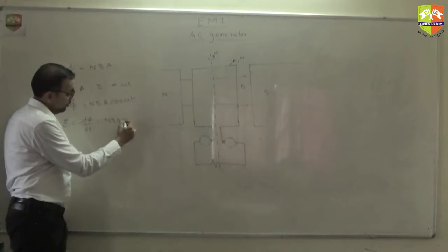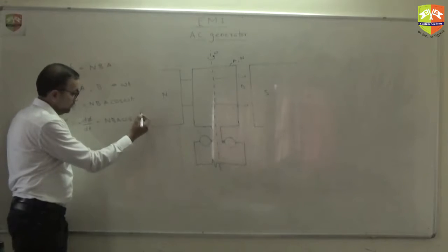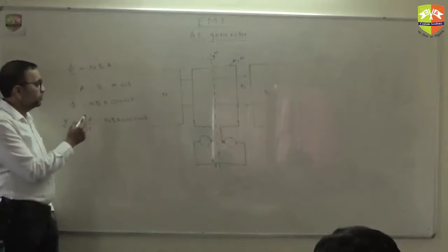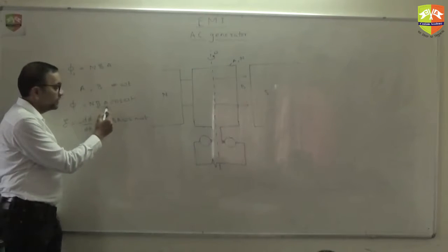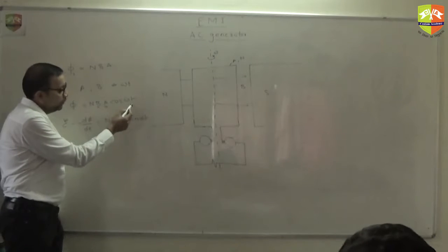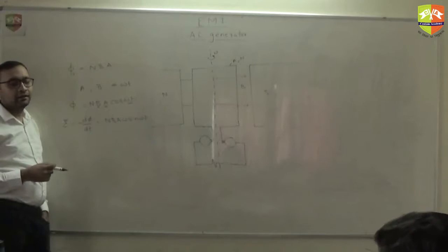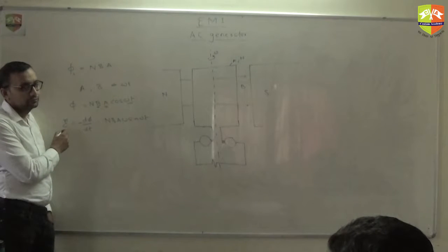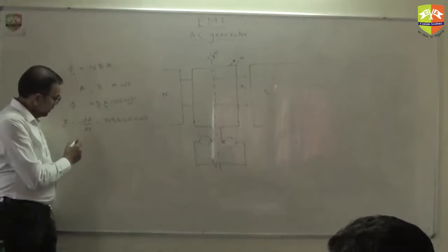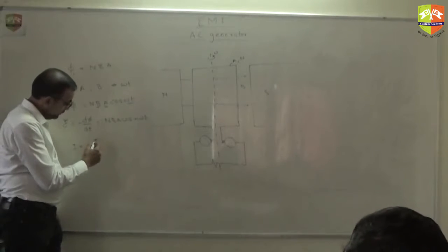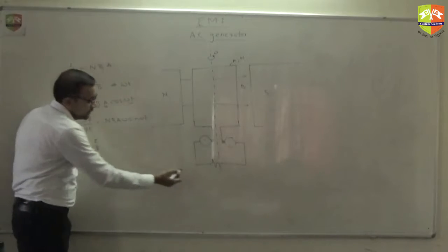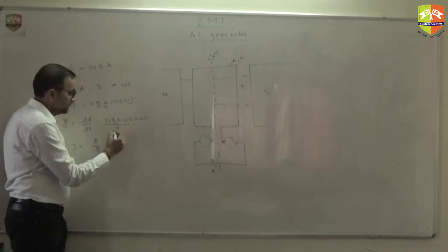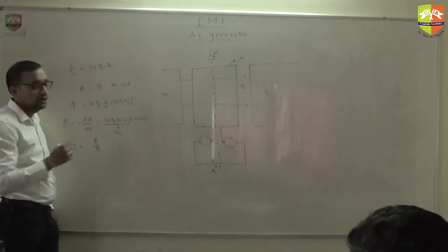The EMF will be minus dΦ/dt, which equals N B A omega sin(ωt). You are not changing the magnetic field or the area of the coil — you are only changing the angle between the area and the magnetic field, and you are able to generate EMF. The current through the coil will be E divided by R, where N B A omega is the magnitude of the peak voltage.